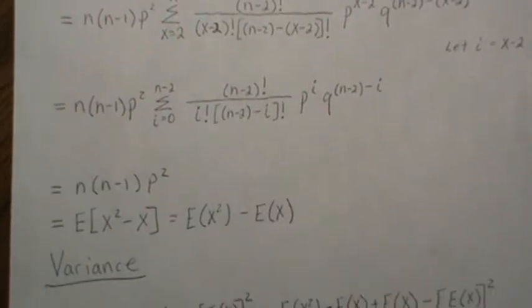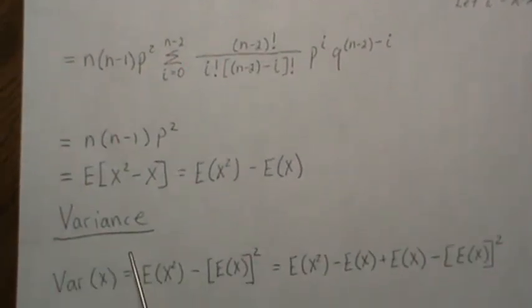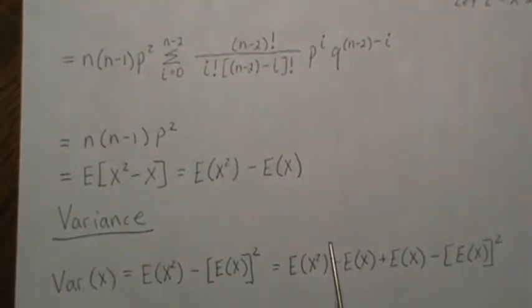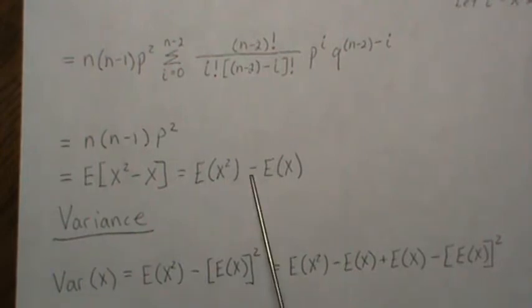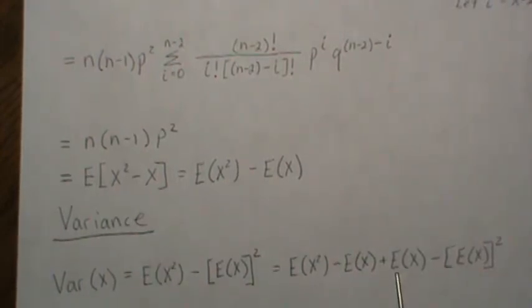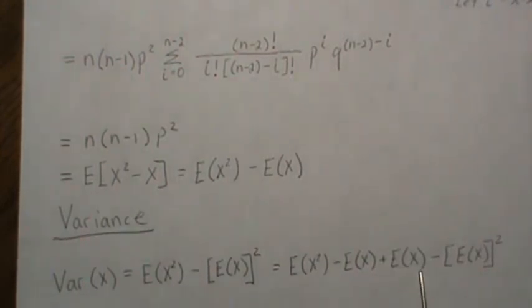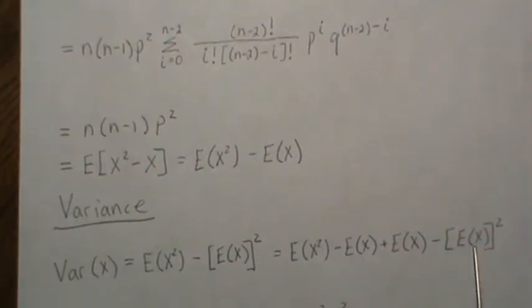So now let's calculate the variance. And the formula for variance is expected value of x squared minus expected value of x quantity squared. But this is not this. So if we subtract and add this same quantity, this is what we just calculated. And expected value of x is np from the first page, np squared.